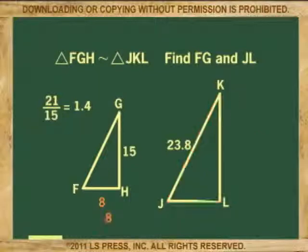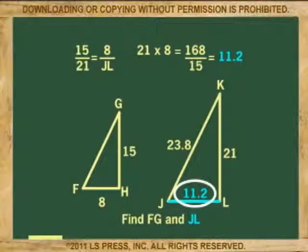If we multiply 8, the value of FH, by 1.4, we get 11.2, which is the value of its corresponding side JL.